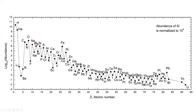We can also use a graph to see elemental abundance. On the x-axis we have atomic number, and on the y-axis we have abundance on a logarithmic scale — so each step up is an order of magnitude. Hydrogen and helium are by far the most abundant elements. We see a dip for lithium, beryllium, and boron, with some bouncing around, but the general trend is that as we go from lighter to heavier elements, we have less and less of those heavier elements.